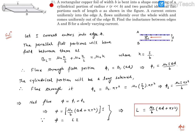Hello, here is question number 21. It reads: a rectangular copper foil of width b is bent into a shape consisting of a cylindrical portion of radius r, which is very small compared to b, and two parallel identical flat portions.